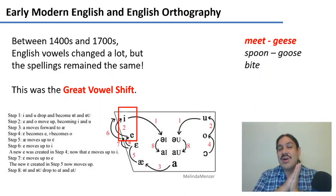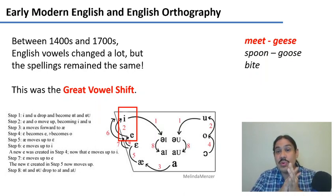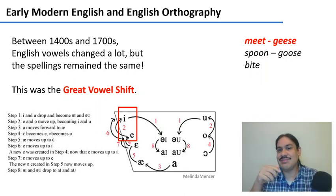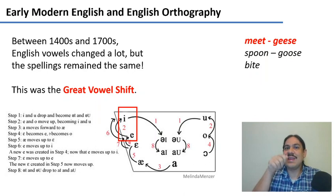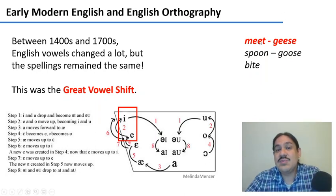Part of this started in the 1400s. Before the 1400s, people wrote English however they heard their own English. So these words would be pronounced according to how they sounded at the time.